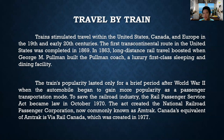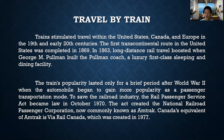Now let us discuss the different types of transportation individually. First is travel by train. Train stimulated travel within the United States, Canada, and Europe in the 19th and early 20th centuries. The first transcontinental route in the United States was completed in 1869. In 1863, long-distance rail travel boosted when George M. Pullman built the Pullman Coach, a luxury first-class sleeping and dining facility. The train's popularity lasted only for a brief period after World War II when the automobile began to gain more popularity as a passenger transportation mode. To save the railroad industry, the Rail Passenger Service Act became law in October 1970.